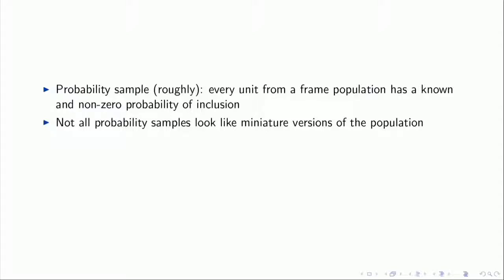People often hear the word 'representative' used to describe samples, and I want to encourage you not to use that word, because it creates the idea that samples should look like mini versions of the population. Not all probability samples look like mini populations — many look like very distorted versions of the population, and that is intentional, created by researchers to improve efficiency. Once you get used to the idea that you'll need to reweight the sample, ideas from non-probability sampling feel more natural.